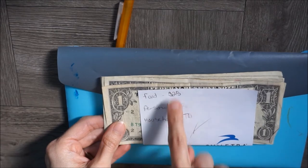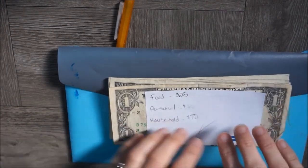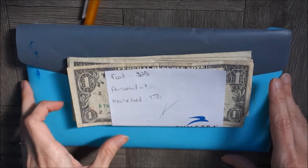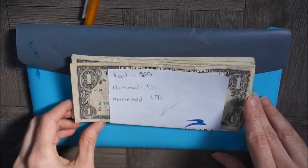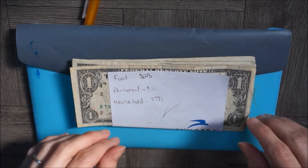And so I just keep track throughout the month of how much is still in there for each category. In addition, if you've seen, I have my budget spreadsheet, and I keep track of what's in there on the budget every week. I go through the budget, so I keep track of that as well.